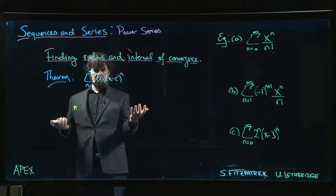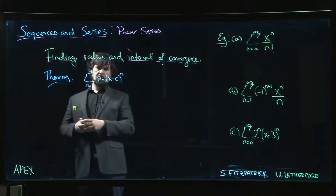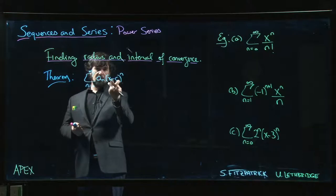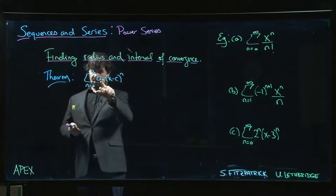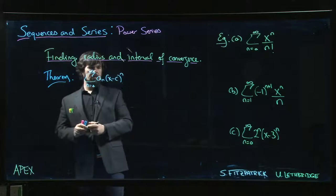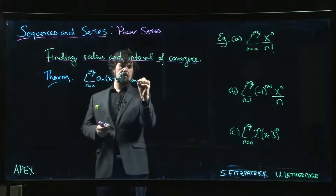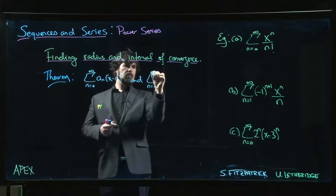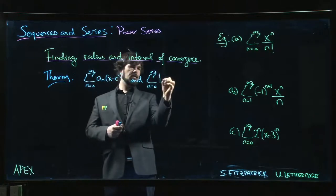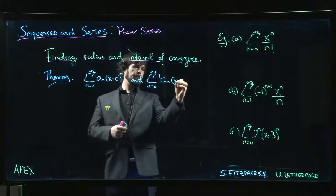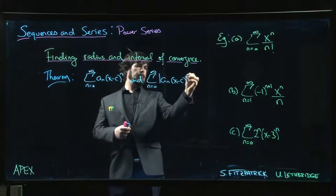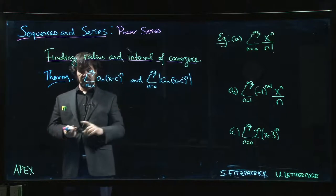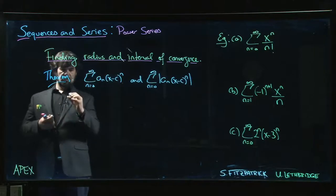Here we don't have that, because x minus c could be either positive or negative depending on the value of x, so these terms could be negative. But it turns out that you can take the absolute value of the terms in your series, and that doesn't affect the radius of convergence.